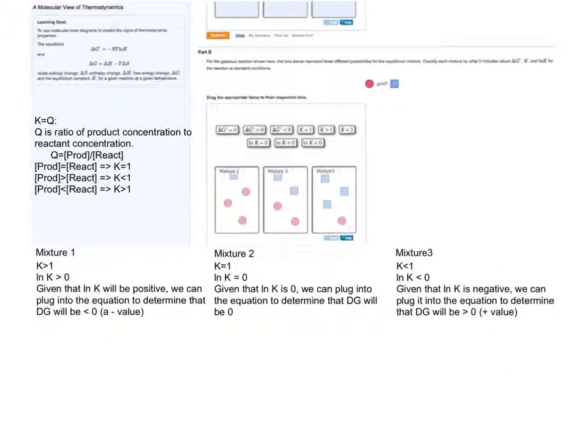What we can gather from observing mixture 1 is that the reactant concentration is high. Reaching equilibrium will only be achieved by shifting to the right, meaning that products will be favored.